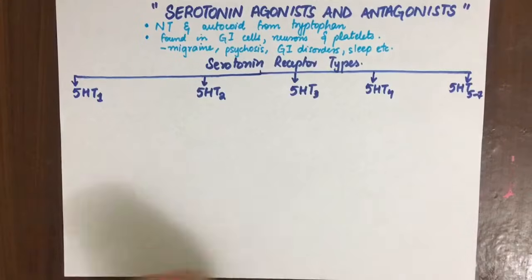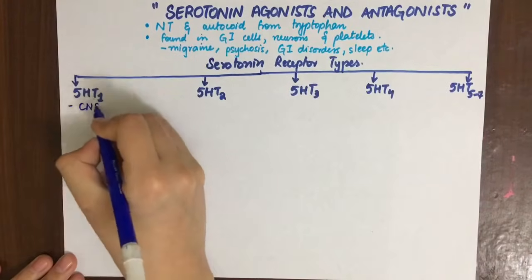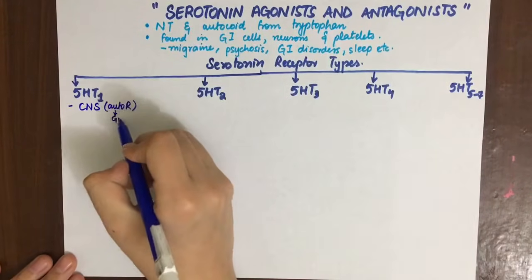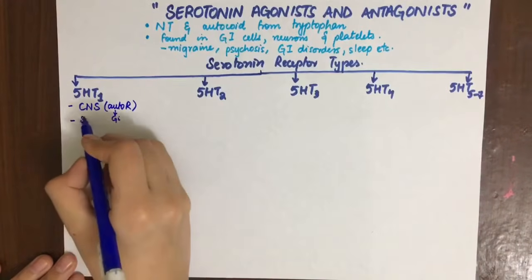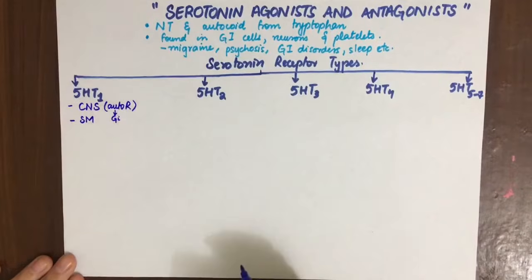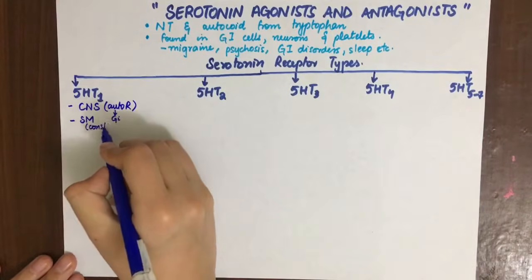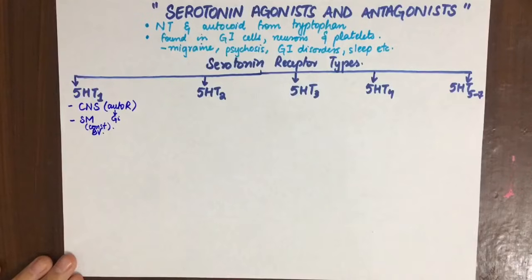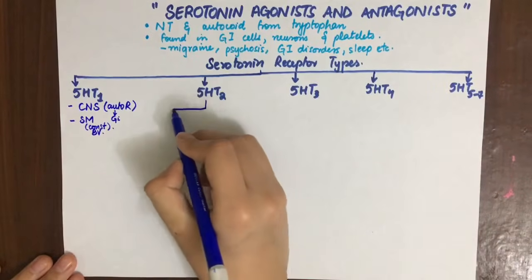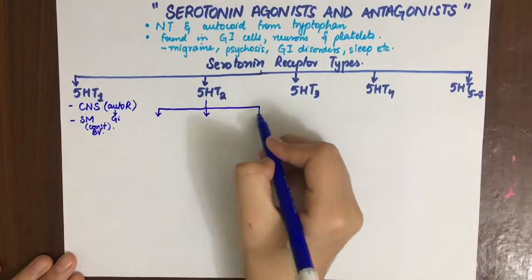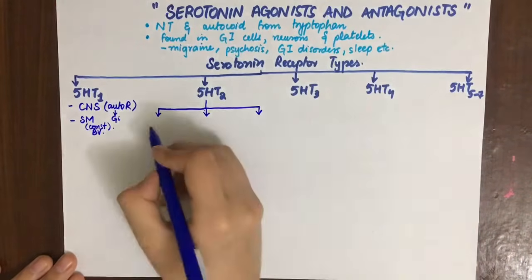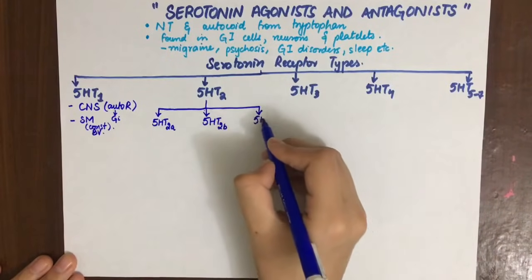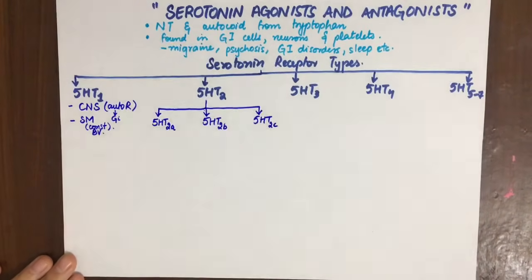5-HT1 is present in the CNS and is usually Gi-coupled, meaning it is an autoreceptor that decreases serotonin release. It is also present in cranial blood vessels and smooth muscle, causing constriction. 5-HT2 is further divided into three subtypes: 5-HT2A, 5-HT2B, and 5-HT2C.